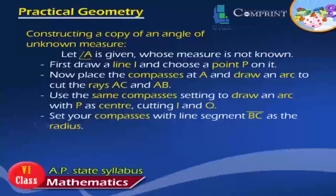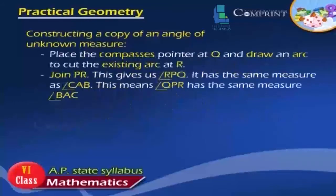Set your compass with line segment BC as the radius. Place the compass pointer at Q and draw an arc to cut the existing arc at R. Join PR. This gives us angle RPQ. It has the same measure as angle CAB. This means angle QPR has the same measure as angle BAC.